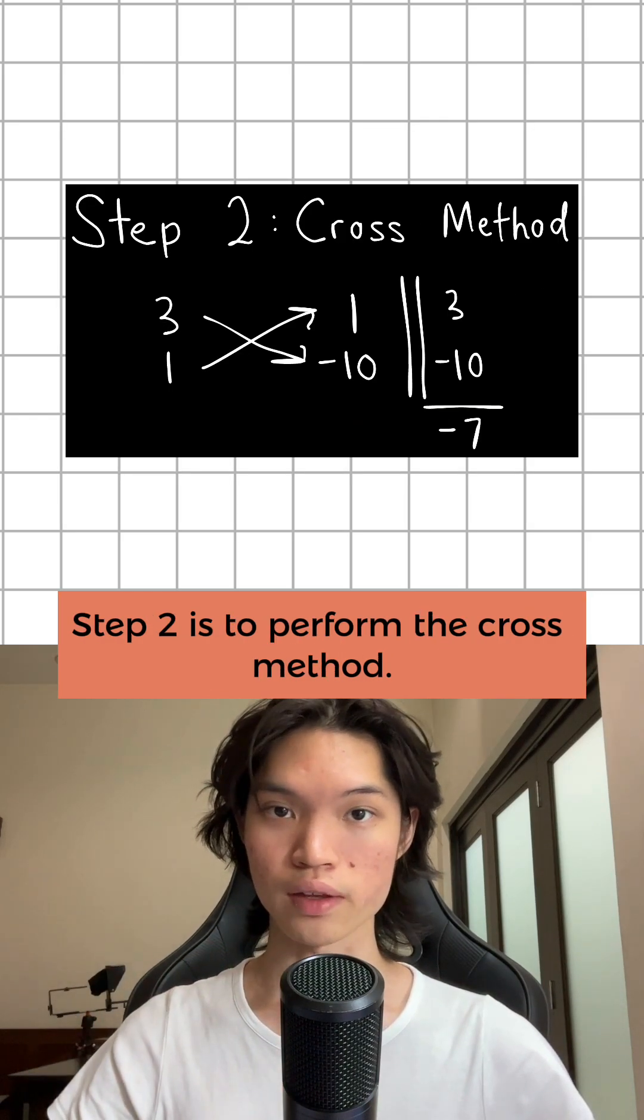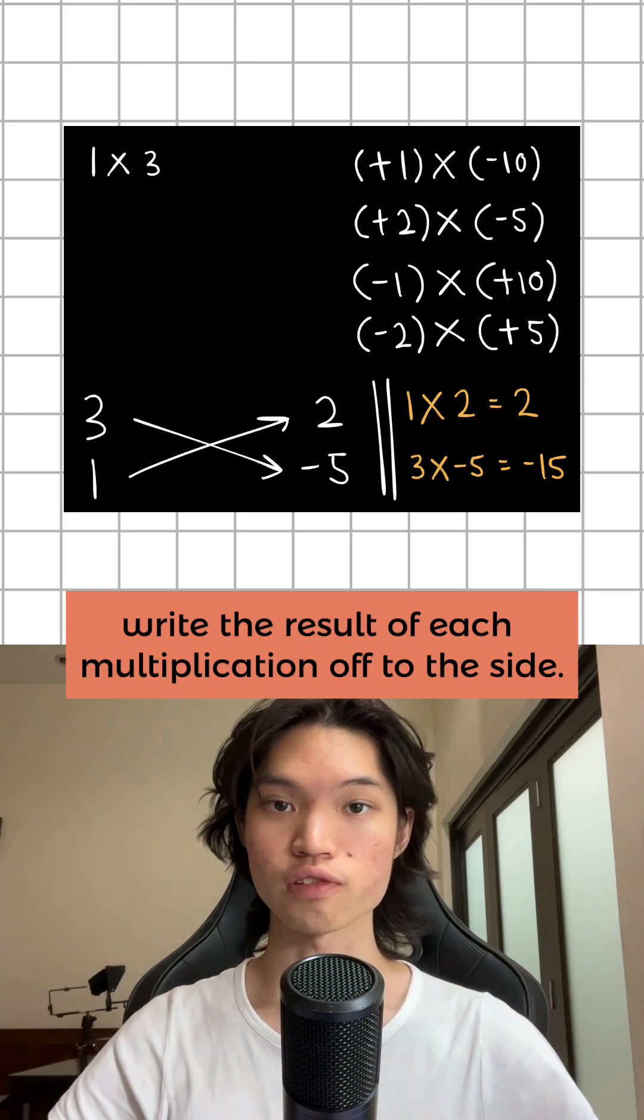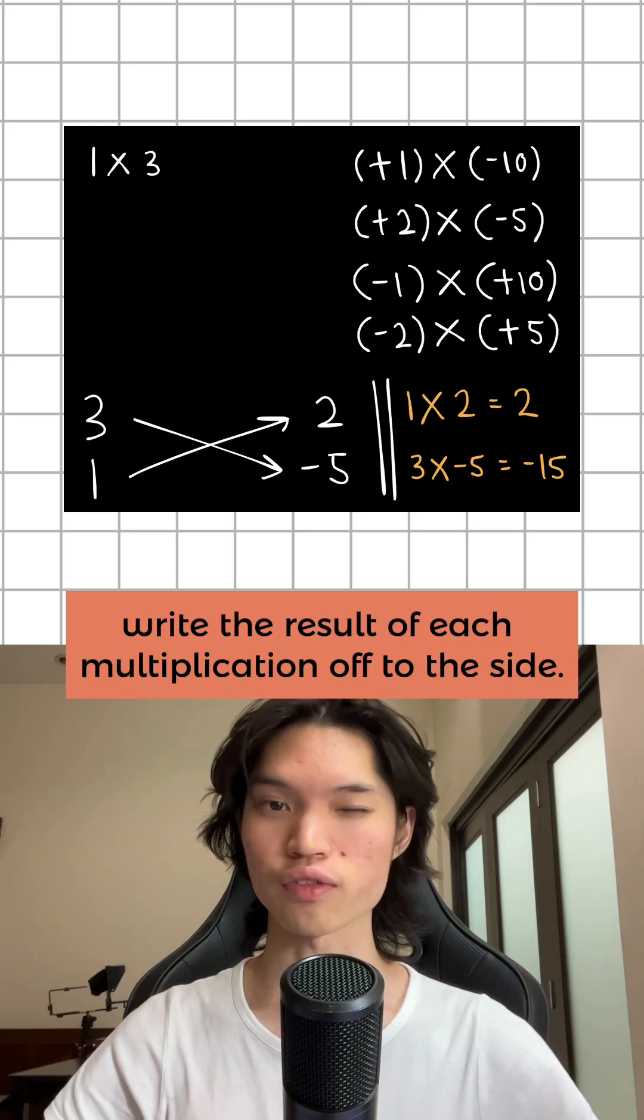Step 2 is to perform the cross method. Choose your factor pairs for a and c and cross multiply them as shown here. Write the result of each multiplication off to the side.